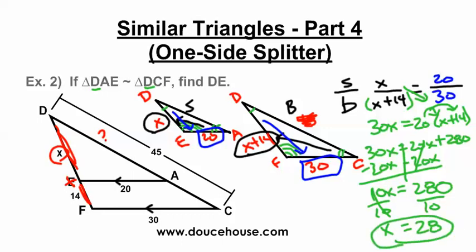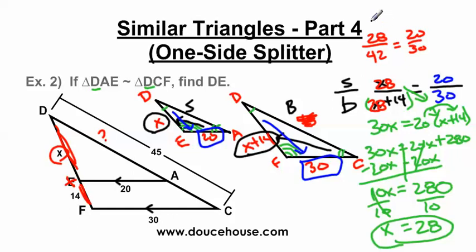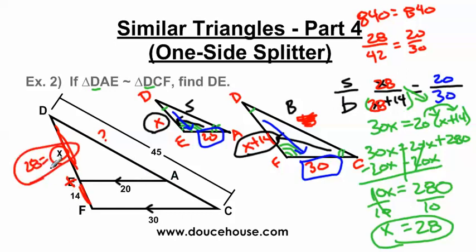If you're not sure, double-check by plugging in 28 for X. We get 28 over 42 equals 20 over 30. Cross-multiplying: 28 times 30 is 840, and 42 times 20 is also 840. Since these balance out, X equals 28 is confirmed.